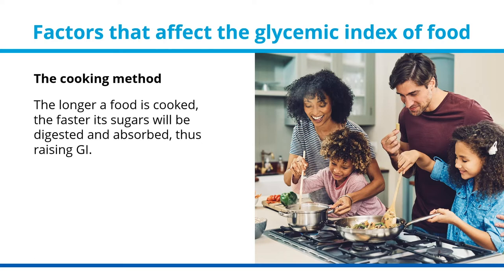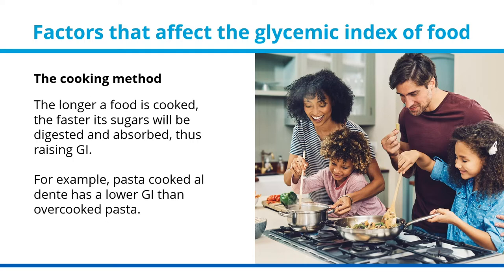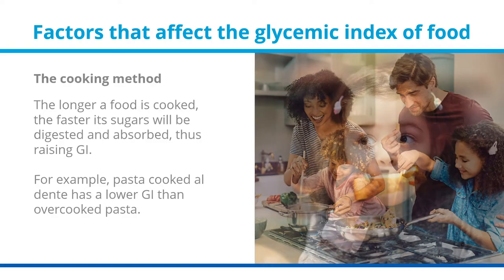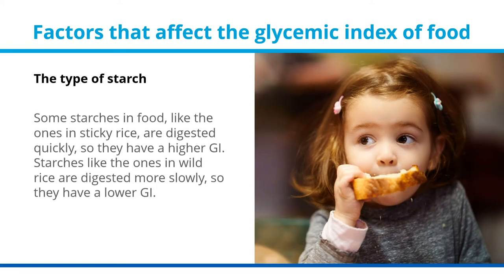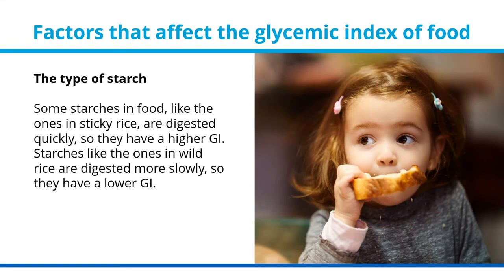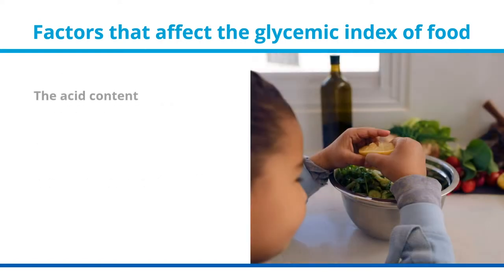The cooking method also affects GI — the longer a food is cooked, the faster its sugars will be digested and absorbed. For example, pasta cooked al dente has a lower GI than overcooked pasta. The type of starch matters too: starches like those in sticky rice are digested quickly and have a higher GI, while starches in wild rice are digested more slowly and have a lower GI.